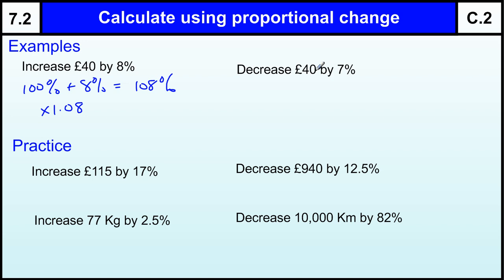To decrease £40 by 7%, to decrease an amount you start with 100%, take away 7%, and you're left with 93%. And to work out 93% we times by 0.93, so the percentage means out of 100, so 93 divided by 100 is 0.93, so that's what we times by.